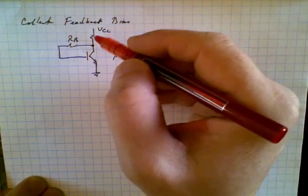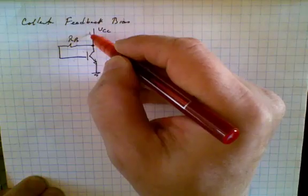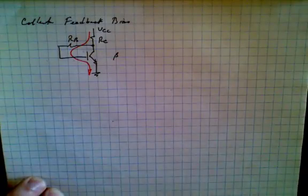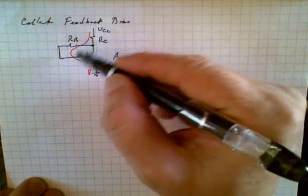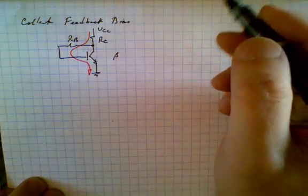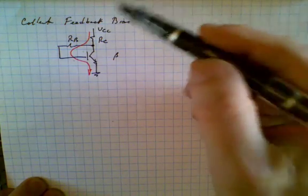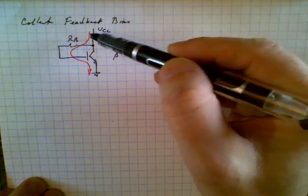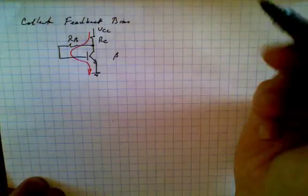To analyze how this circuit behaves, we'll start by writing Kirchhoff's voltage law around this loop here. Now Kirchhoff's voltage law simply says that the sum of the voltage drops around the loop is equal to zero, or another way we can say it is that the total voltage drop Vcc is equal to the sum of the individual voltage drops along the circuit.